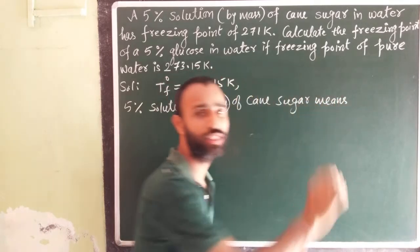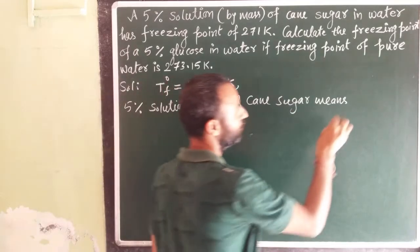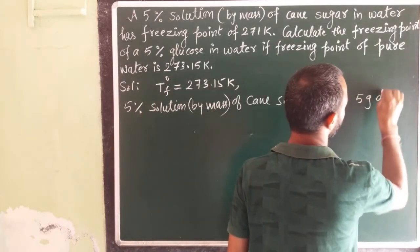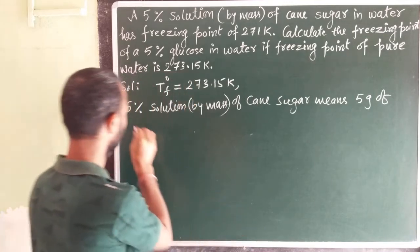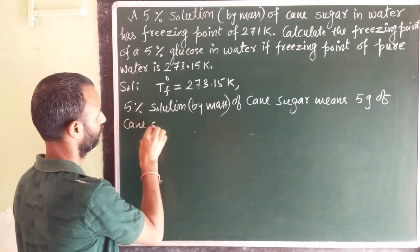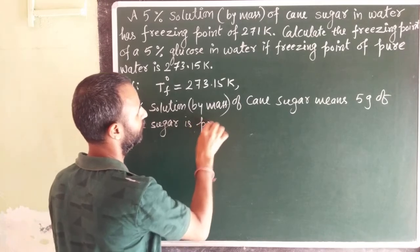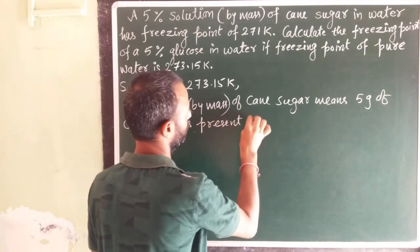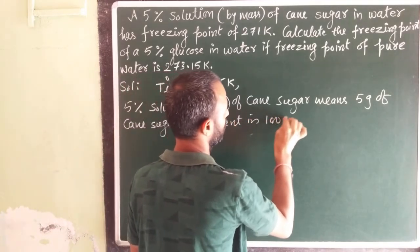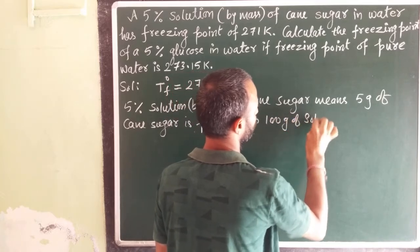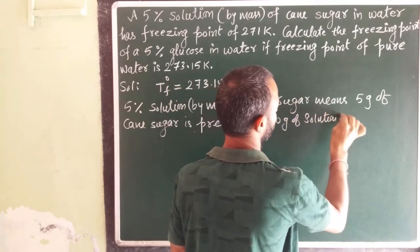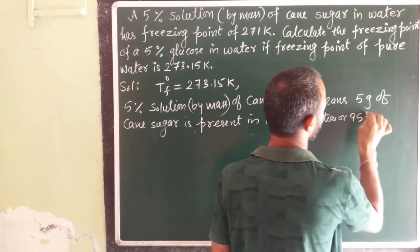It means 5 gram of cane sugar is present in 100 gram of solution or 95 gram of water.